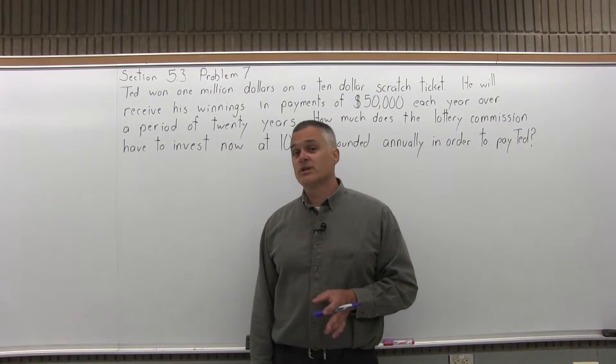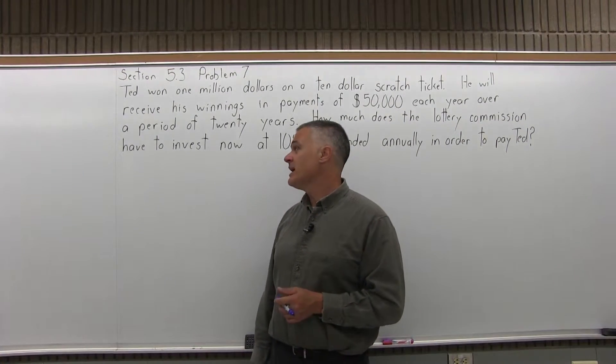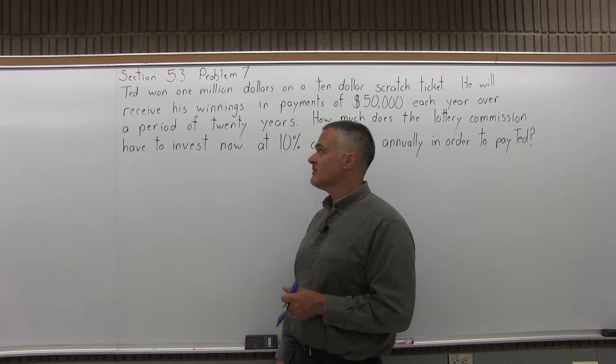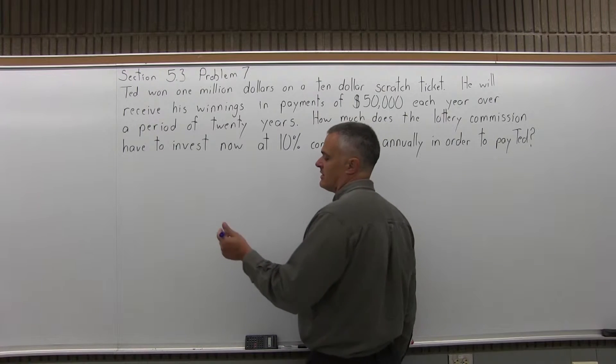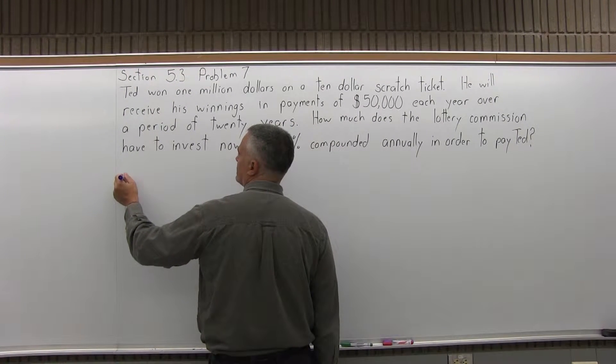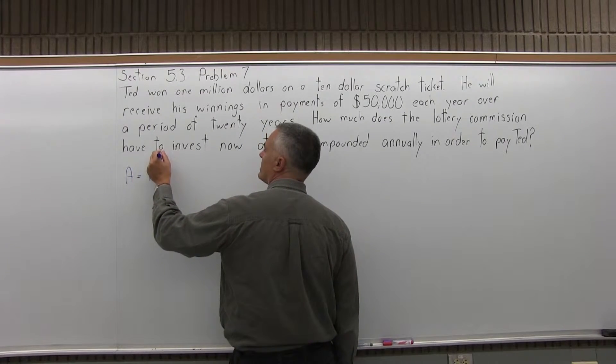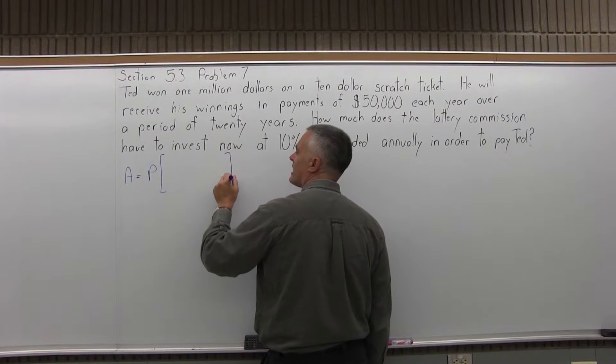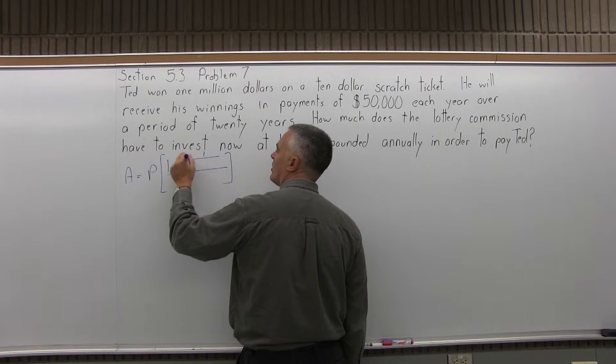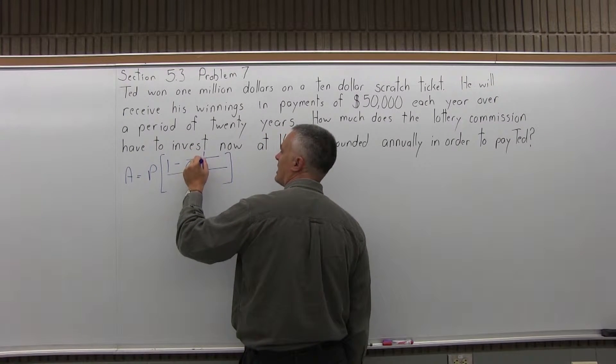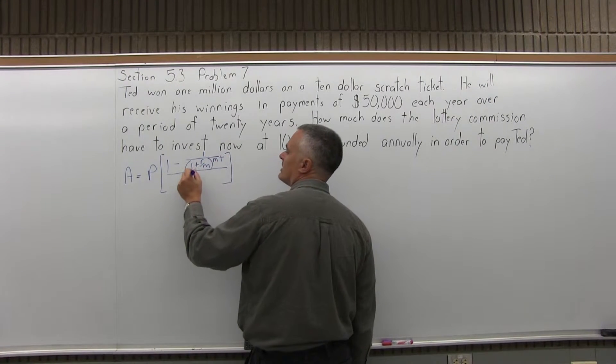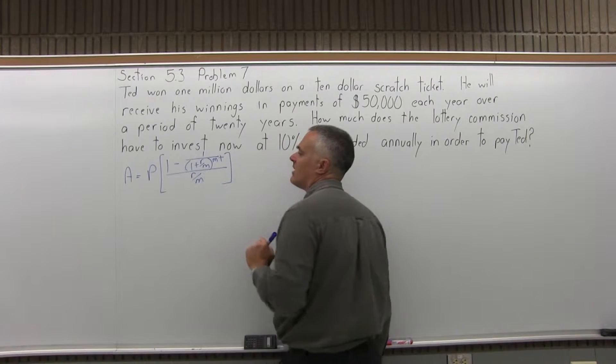So again, this is the present value of an annuity because it's paying, it's not exactly a salary, but it's like a salary. You can think of it as a salary of $50,000 a year. So the formula for the present value of an annuity is A, that total lump sum, equals P, the regular payments, times some fairly big brackets. And in the numerator of the brackets, we have 1 minus 1 over, in parentheses, 1 plus R over M, close the parentheses to the M times T power. And in the denominator of the brackets, R over M.